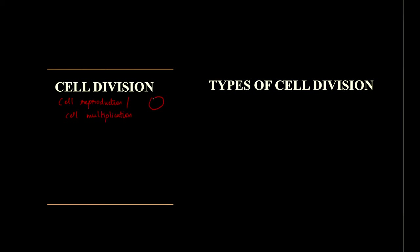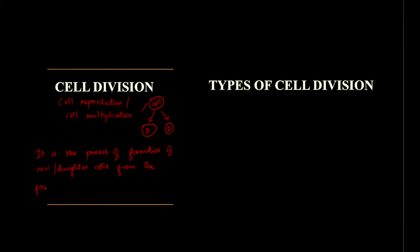Here the parent cell will be there. It will undergo replication to form two daughter cells. Cell division is the process of formation of new or daughter cells from the pre-existing cells.